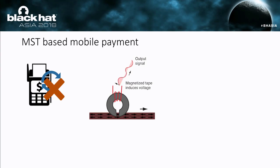A company named LoopPay found that the POS machine comes with a magnetic head to sense the data stored in a magnetic strip card. When a user swipes a magnetic strip card, the magnetic strip, which is made of magnetic materials, will stimulate the magnetic head inside the POS machine.